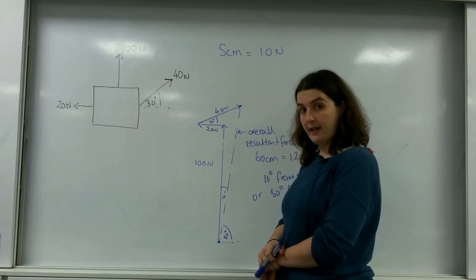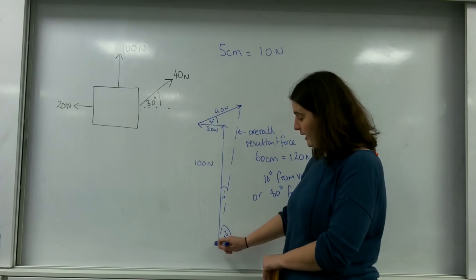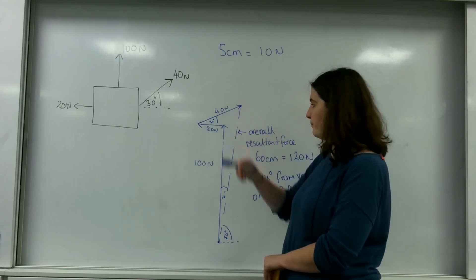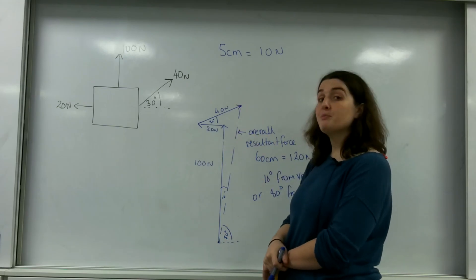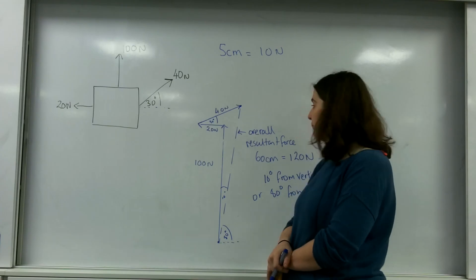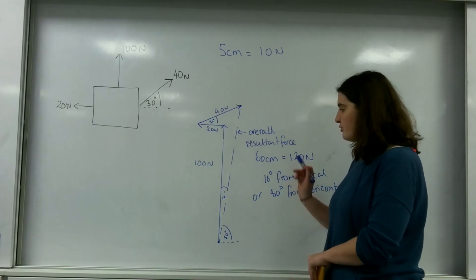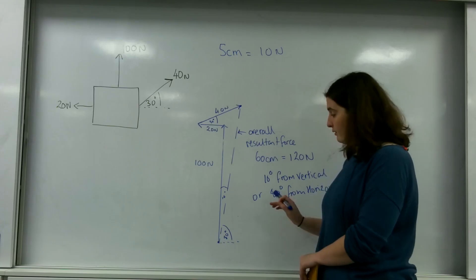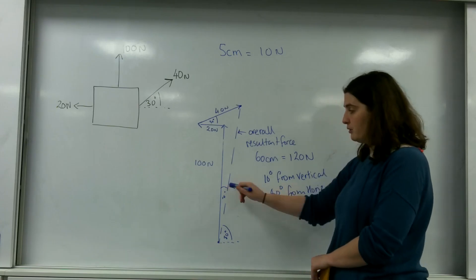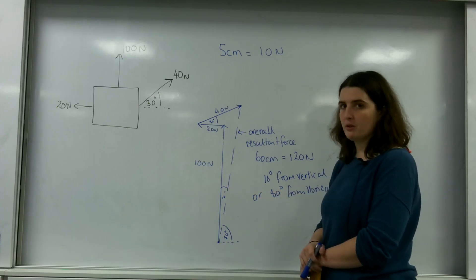Your resultant vector will be from here to here. And you can literally just measure it because this is a scale diagram. I have got 120 newtons and 10 degrees from the vertical or 80 degrees from the horizontal.